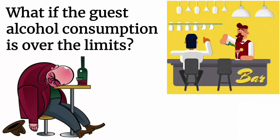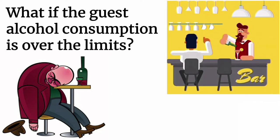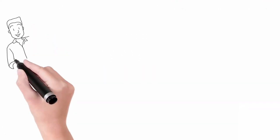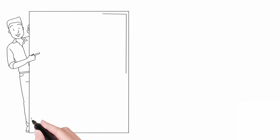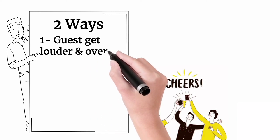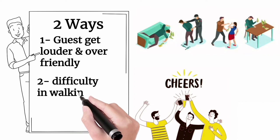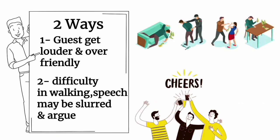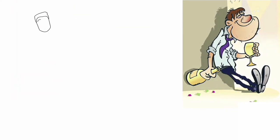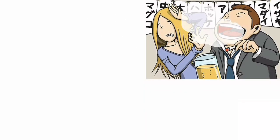Number five: what if a guest's alcohol consumption exceeds the limits? This type of situation mainly happens at bars, lounges, or nightclubs. The waiter must follow a certain procedure to handle it. The behavior of a drunken guest may be identified in two ways: one, the guest gets louder and may become overly friendly with everyone; two, the guest has difficulty walking, their speech may be slurred, they may argue, and may have reduced muscle coordination.